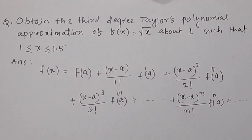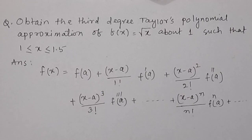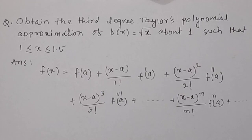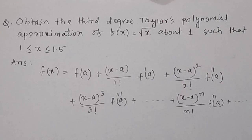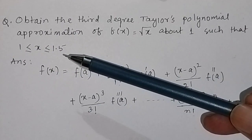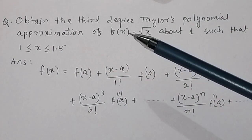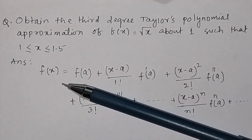Obtain the third degree Taylor polynomial approximation of the function f(x) = √x about 1, such that x lies between 1 and 1.5. We know that in the Taylor series expansion, we find the variation of the function — how the function varies in the vicinity of a point. Here the given point is 1, and the vicinity lies between 1 and 1.5.